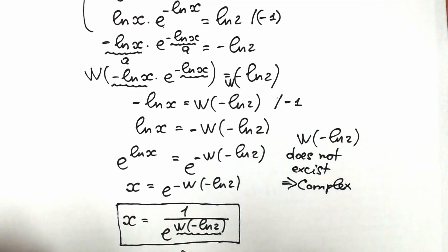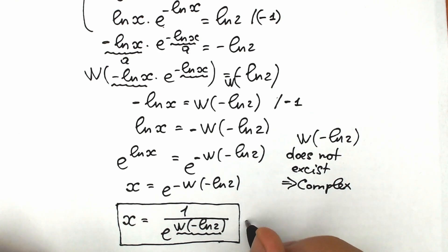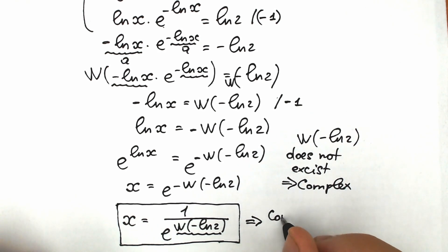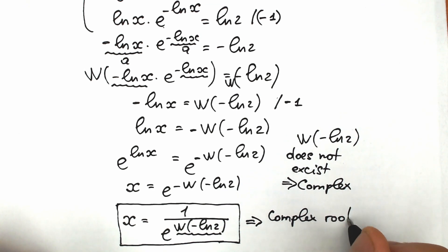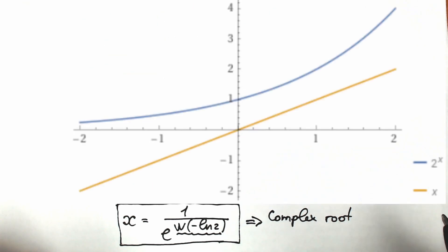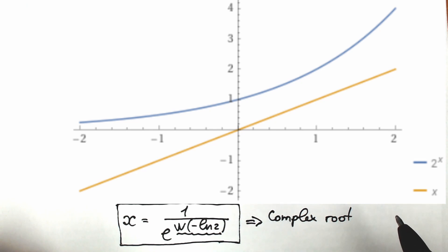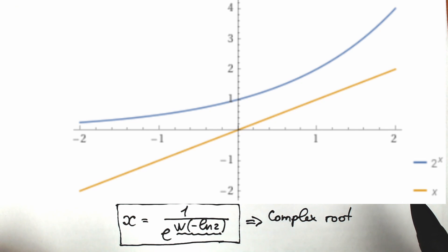So as a result this is a complex root. And maybe a lot of students are interested in a graph or plot — so as you can see, both graphs do not intersect with each other. The line y = x does not intersect with the exponential function 2 to the power x, and this proves that we don't have a real number root here.